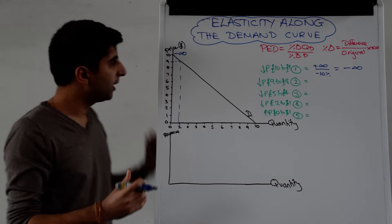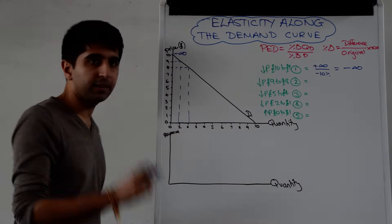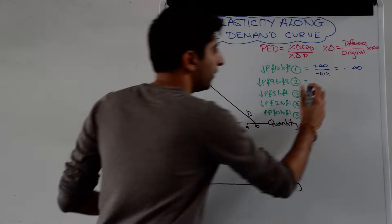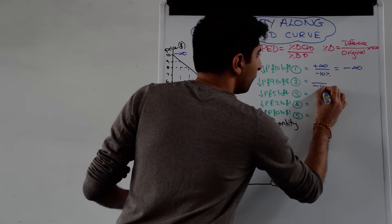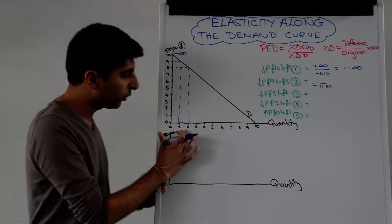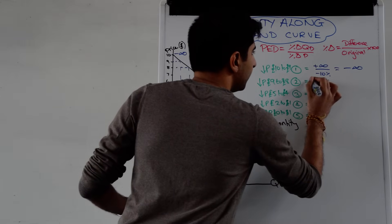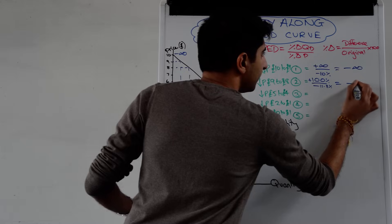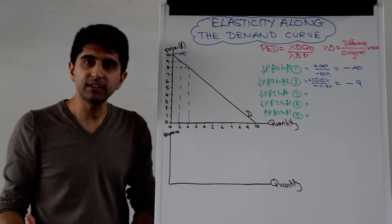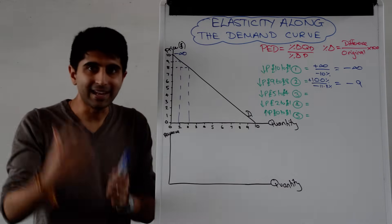A price drop from £9 to £8: at £8, the quantity demanded is 2. The percentage change in price is 1 over 9 times 100, so approximately 11.11% reduction. Quantity increases from 1 to 2, which is a 100% increase in quantity demanded. That gives us an elasticity of minus 9 — greater than 1. Remember, we ignore the sign when we interpret the figure. So greater than 1 means very elastic demand. The top half represents elastic demand.